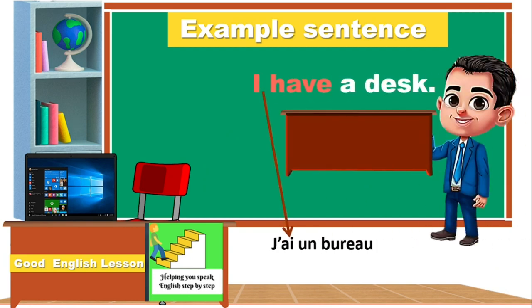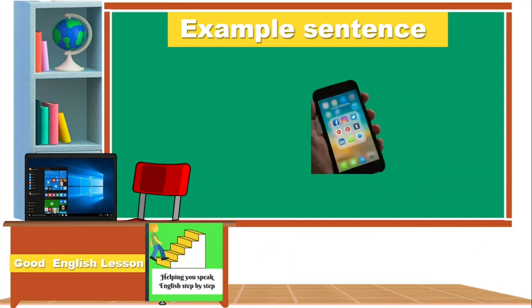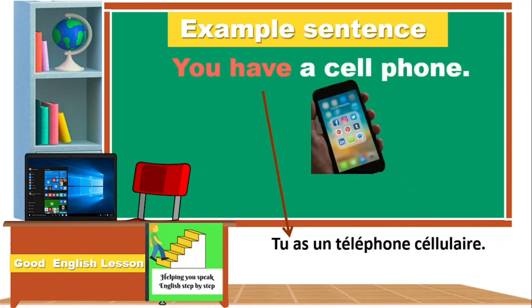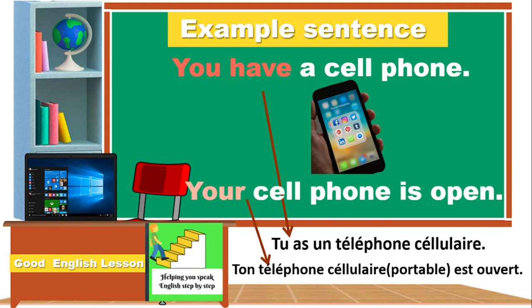I have a desk. My desk is brown. You have a cell phone. Your cell phone is open.